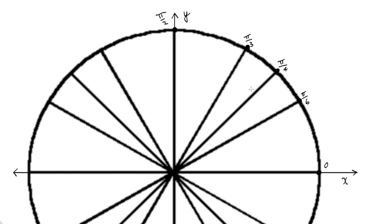0 and pi over 2 are actually our easiest points. If you take a look at quadrant 1 of the unit circle, since the radius is 1, you should be able to tell me the coordinates of those boundary points. That point on the x-axis is (1, 0), and then the point at the top is (0, 1). The tricky ones are pi over 6, pi over 4, and pi over 3 — the ones in between.